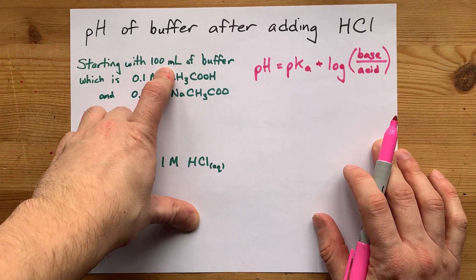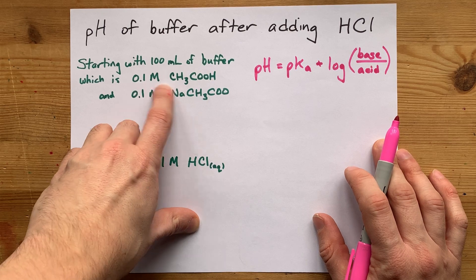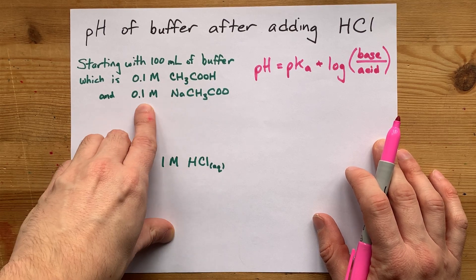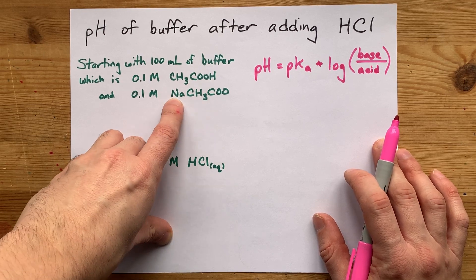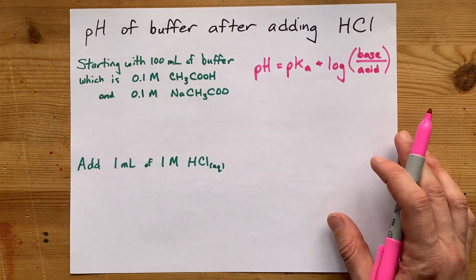We're going to start with 100 milliliters of a buffer that's 0.1 molar acetic acid and 0.1 molar of its conjugate base. I chose sodium acetate, but it could have been potassium acetate or anything else.